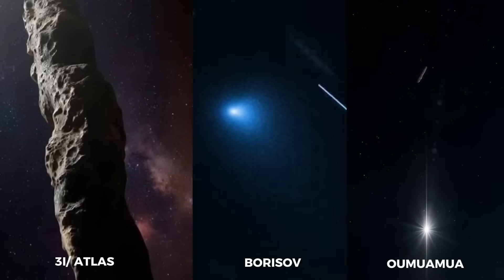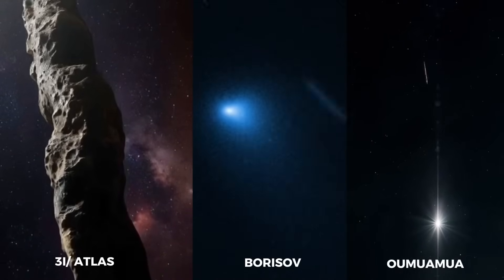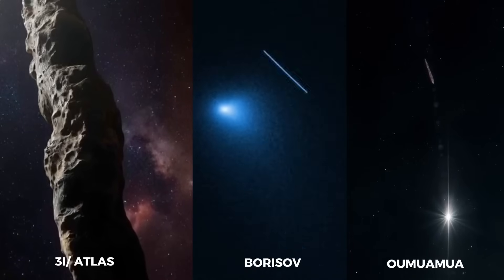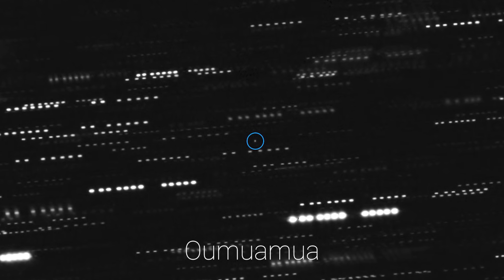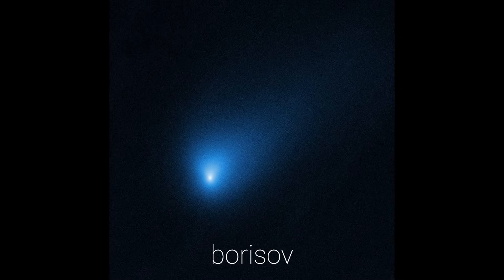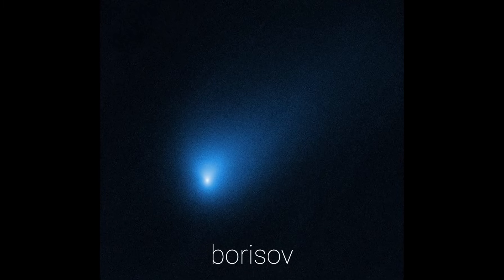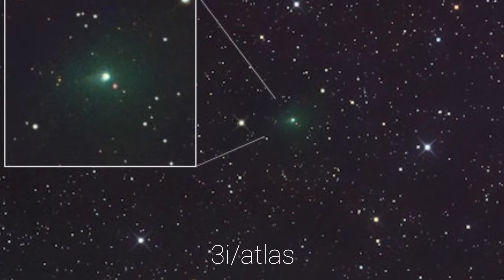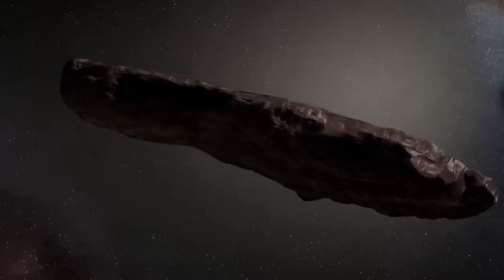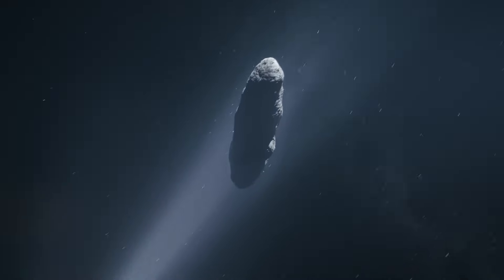Compare Atlas with Oumuamua and Borisov. All three have non-gravitational acceleration, strange shapes, and paths from other stars. Oumuamua was like a cigar without gas, Borisov a normal gaseous comet. But Atlas is green, active, and gigantic. Recently, studies have shown that Oumuamua might have come from a molecular cloud, and Borisov has a chemical composition similar to our own comets. But Atlas, with its mass, breaks all patterns.